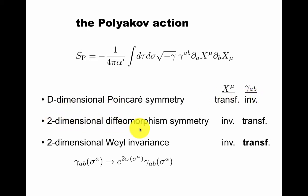It has two-dimensional diffeomorphism symmetry, meaning symmetry under change of coordinate on the worldsheet, under which X is a scalar, and gamma transforms as a two tensor, as befits a metric on the worldsheet.